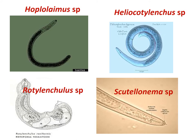The first image shows Hoplolaimus, the lance nematode — you can see it is a very bulky nematode compared to other plant parasitic nematodes. Then Helicotylenchus is a spiral nematode — you can see the spiraled shape when they are relaxed. Rotylenchulus reniformis is the kidney-shaped reniform nematode — we can see the female nematode here. And Scutellonema causes dry root rot of yams.